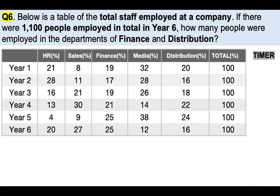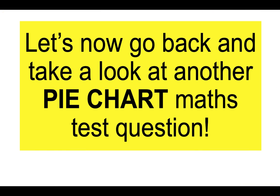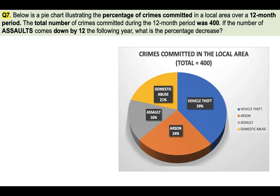I hope you're enjoying these. I've got plenty more to work through, so please don't go anywhere. And if you are enjoying it, I very much appreciate it if you gave the video a like. Let's now go back and take a look at another pie chart maths test question. Below is a pie chart illustrating the percentage of crimes committed in a local area over a 12-month period. The total number of crimes committed during that 12-month period was 400. And the question is: if the number of assaults comes down by 12 the following year, what is the percentage decrease? So we have to calculate percentage decrease, which is not easy unless you follow this process.